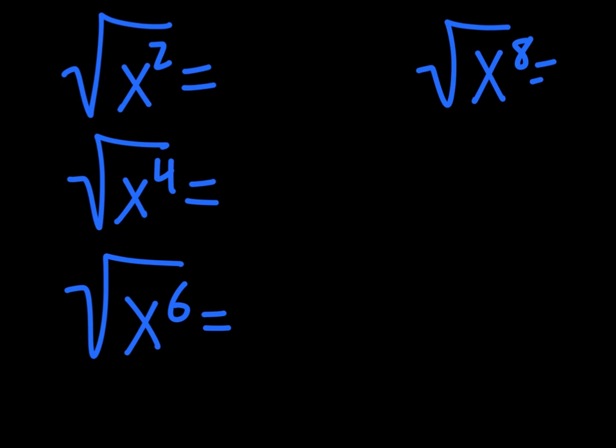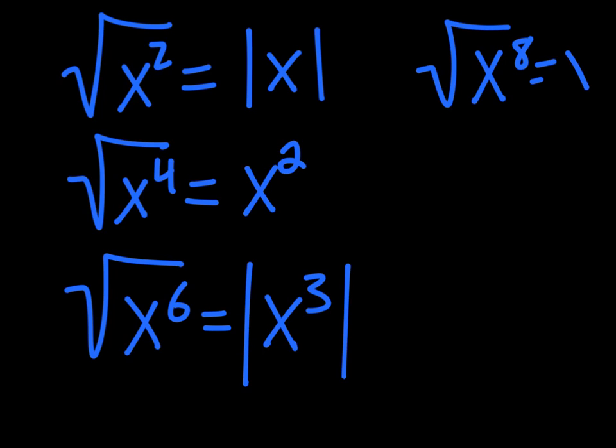So when we take the square root of x squared, the result is the absolute value of x. When we take the square root of x to the fourth, the result is just x squared, because this squared already ensures our positive answer. When we have the square root of x to the sixth, we get x to the third, but we had even, even, odd, so therefore we do need our absolute value bars. The square root of x to the eighth, you guessed it, is just x to the fourth.